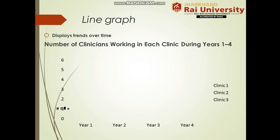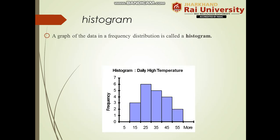Next is line graph. A line graph is plotted with respect to time and displays trends over time. For example, the number of clinicians working in each clinic during years 1, 2, 3, and 4 are depicted by the line. Next is histogram — it is a graph of the data in a frequency distribution, done with the help of intervals. In this example, the intervals are 5, 15, 25, 35, 45, 55, and the y-axis shows the frequency.